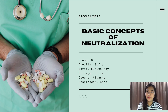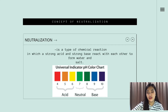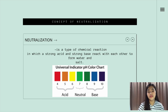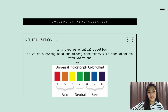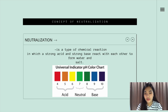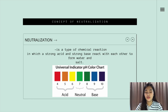The basic concept of neutralization. Neutralization is a type of chemical reaction in which a strong acid and a strong base react with each other to form water and salt. It involves the combination of H+ ions and OH- ions to generate water. The pH level of the mixture or solution is defined according to its corresponding color with the use of a universal pH indicator solution or pH strips test.